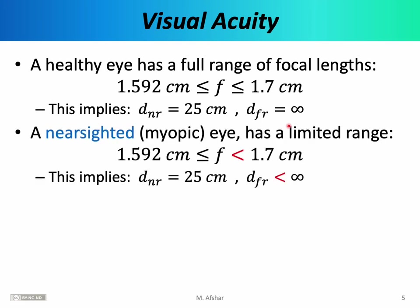A myopic or nearsighted eye cannot do that. A myopic eye has a focal range between 1.592 centimeters and some number less than 1.7 centimeters. How much less depends on how bad the eye is. If the upper limit of the focal length is something like 1.69, the eye probably isn't very bad — you can likely drive without glasses. On the other hand, if the upper limit is something like 1.6, you have severely myopic eyes and should definitely be wearing glasses or contact lenses.